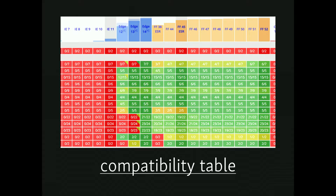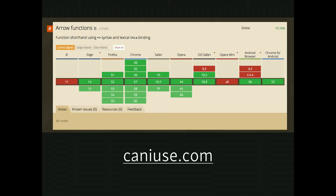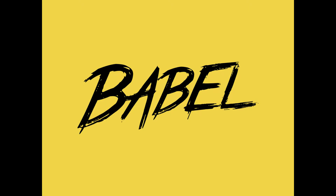Here's a compatibility table from Babel. It shows all the ES6 features and how they're supported by different browsers. You can see a lot of red for IE — surprise, shocker. You can use caniuse.com to look up specific things like arrow functions, and you can see that IE11 doesn't support them at all. So you're probably asking: this is the real world, I need to support IE11 — how do I use ES6? The answer is Babel.